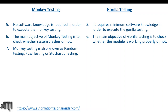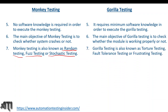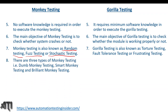Monkey testing is also known as random testing, fuzz testing, or stochastic testing — remember these names. Gorilla testing is also known as torture testing, fault tolerance testing, or frustration testing, because we repeatedly perform testing on a particular module, which is why it's called frustration testing as well.